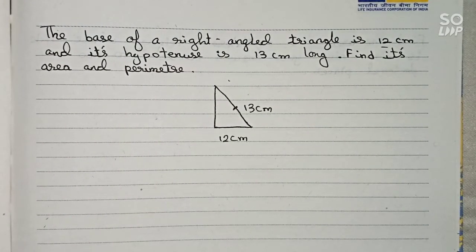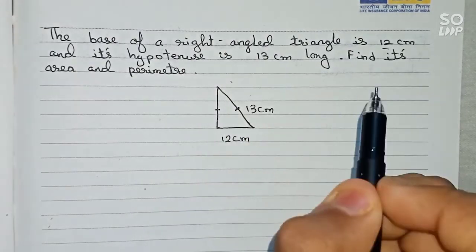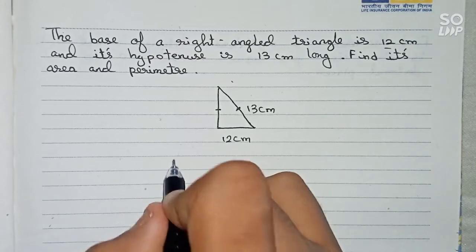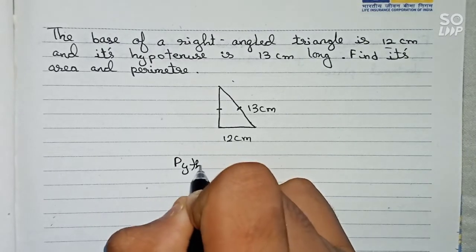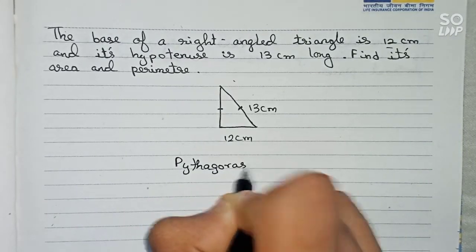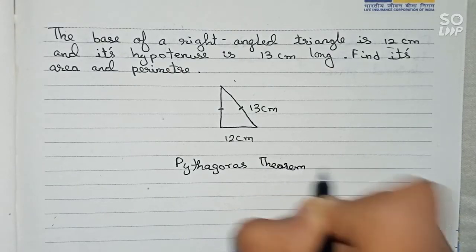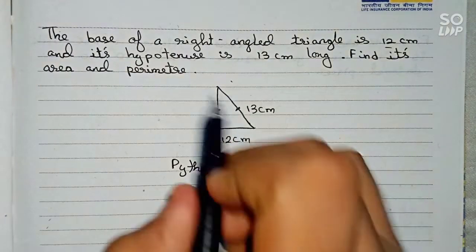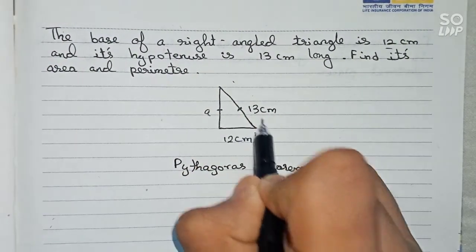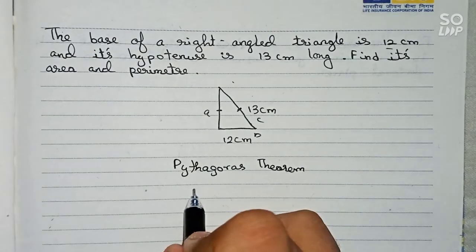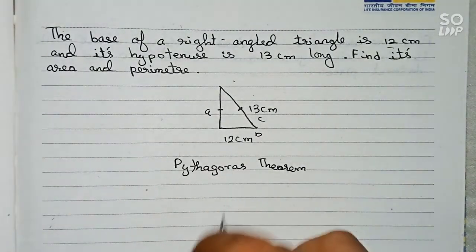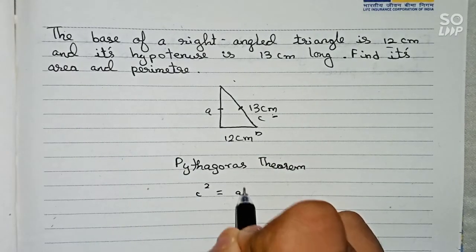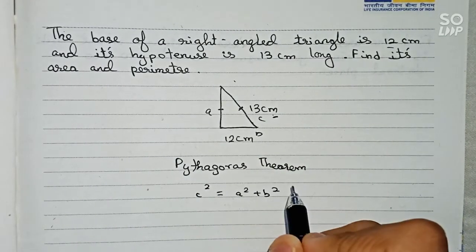To find the area or the perimeter, we first have to find this unknown side. We will find it using the Pythagoras theorem. According to the Pythagoras theorem, if we take this side as a, this as b, and this as c, the length of the longest side — the hypotenuse — is c² = a² + b².